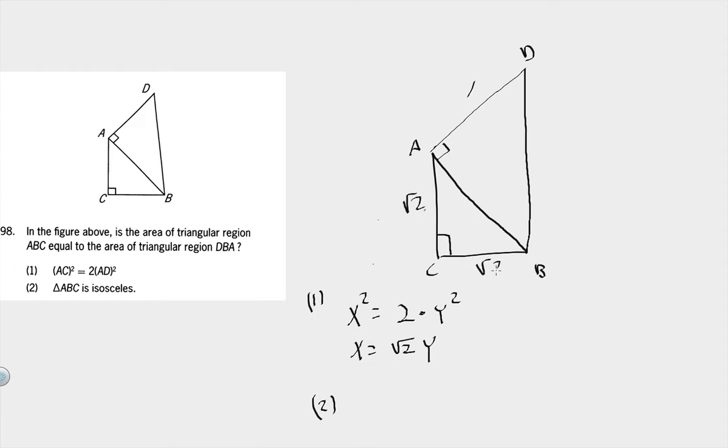If we say that X is the right isosceles, then we know that we've got this configuration, and that leaves this configuration for the other triangle. And in this case, the areas are equal, because root 2 squared is the same as 1 times 2.